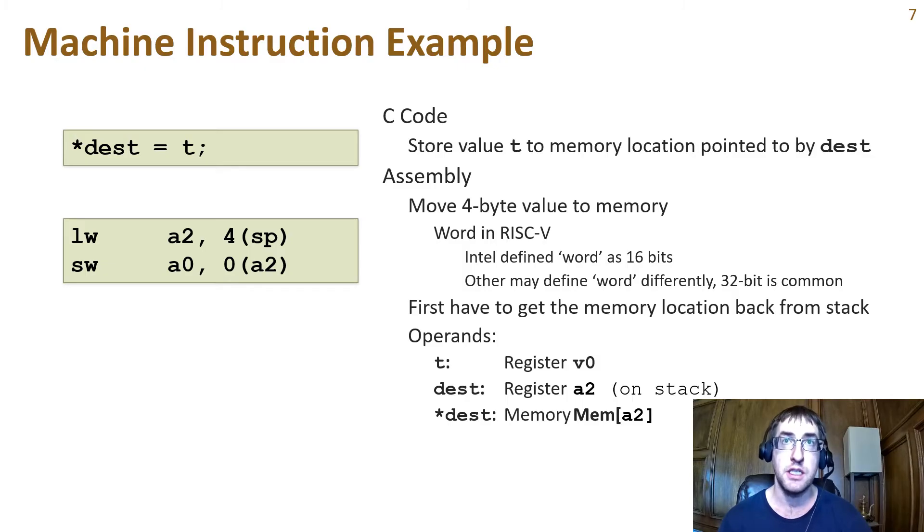The LW instruction mnemonic stands for load word, which indicates bringing a 32-bit value into a register from memory. Other architectures may define word differently. For example, Intel x86 uses a 16-bit word size. In RISC-V, we may also talk about double words, which are 64 bits, or quad words of 128 bits. Because t is coming from the output of a procedure call, its value is in the return value register A0. So, the second assembly instruction stores the value from A0 to the address located at 0 bytes offset from the pointer value in the A2 register that we just restored from the stack.